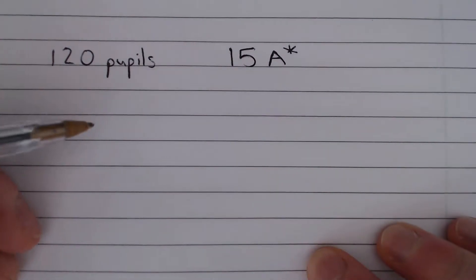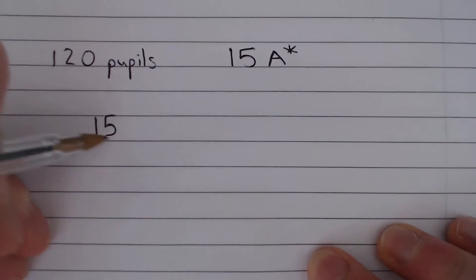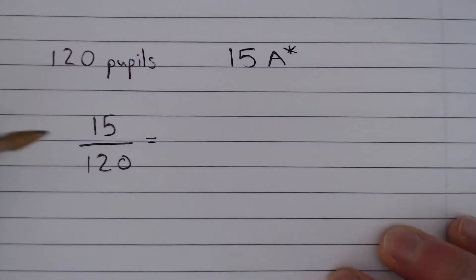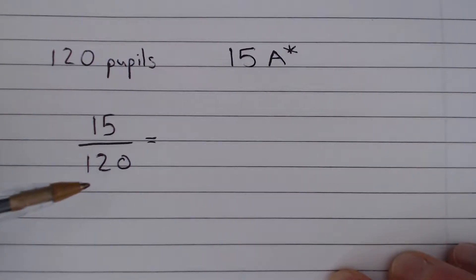We need to find out the proportion. So the proportion is 15 out of 120. Now we could do 15 divided by 120 and go through that process, but it's easier to simplify this fraction first.